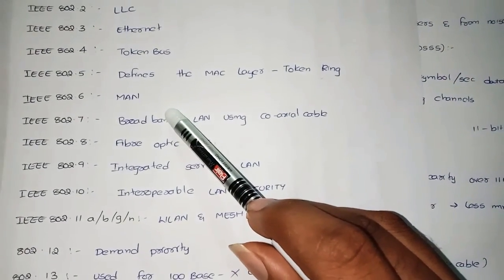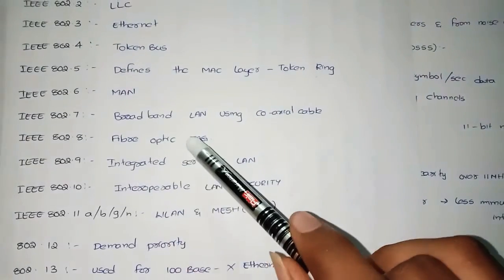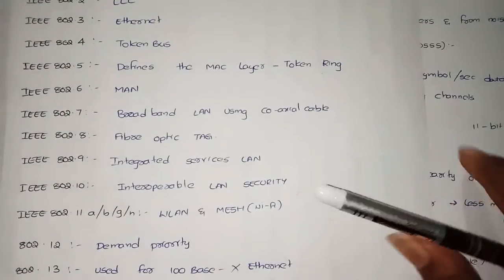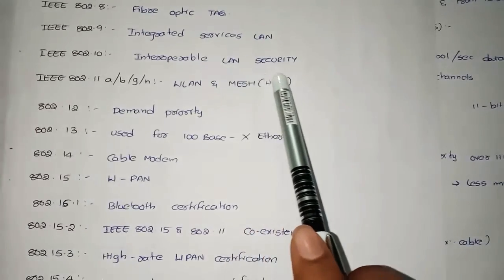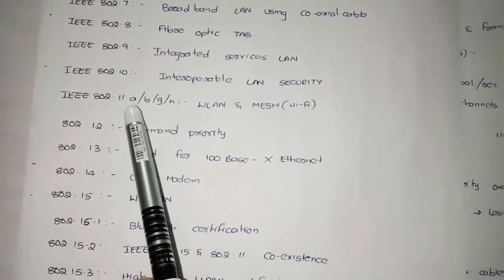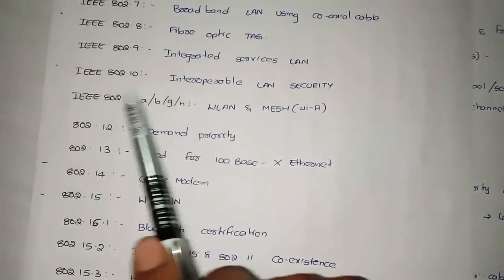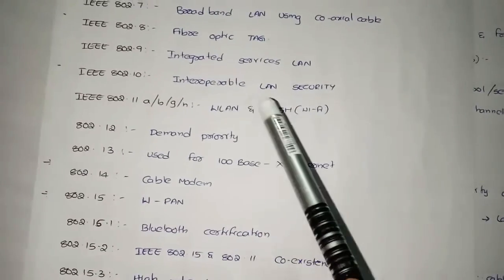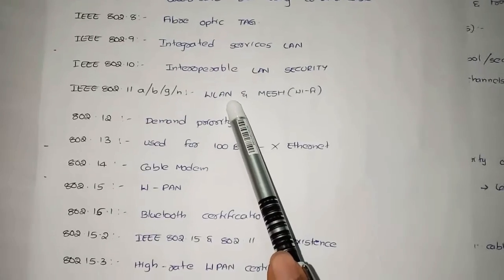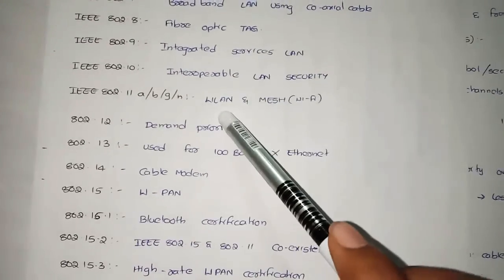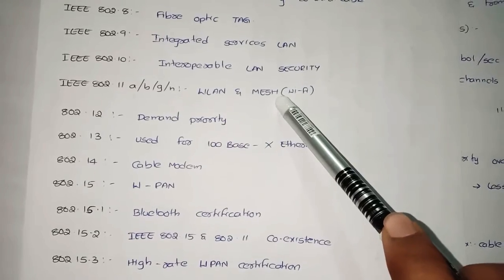IEEE 802.6 deals with MAN — metropolitan area network, which is a broad-based network. IEEE 802.7 deals with broadband LAN using coaxial cable. IEEE 802.8 covers fiber optic. IEEE 802.9 covers integrated services LAN. IEEE 802.10 covers interoperable LAN security. IEEE 802.11 deals with wireless LAN — Wi-Fi — and includes sections a, b, g, and n.